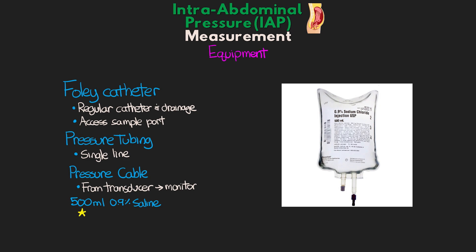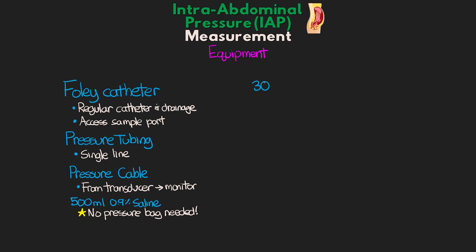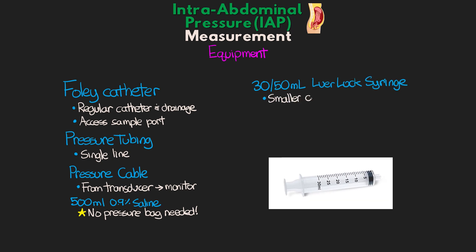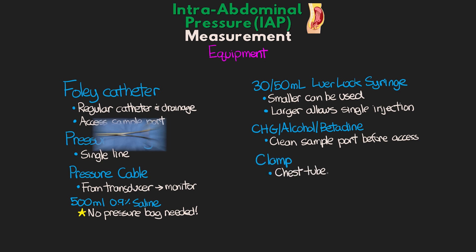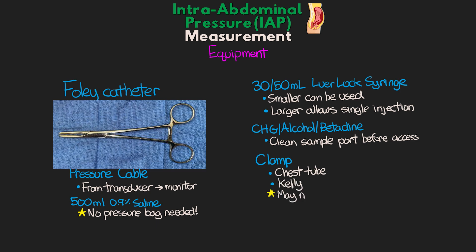One important caveat with this pressure setup is we do not need a pressure bag. We're also going to need either a 30 mL preferably or a 50 mL Luer-Lok syringe. A smaller one can be used, but having these larger ones allows for a single injection of saline. You're also going to need some sort of CHG wipe, alcohol wipe, or betadine to properly clean that sampling port before we access it. Finally, you may need a chest tube clamp or Kelly clamp if your Foley drainage system doesn't have a built-in way to clamp the tubing.